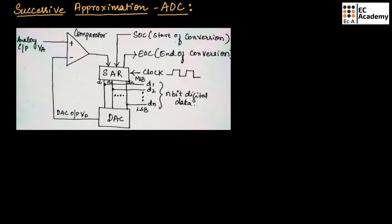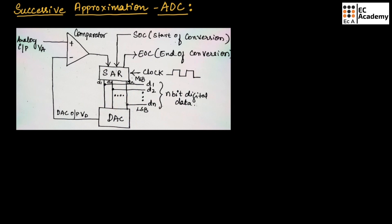The most commonly used analog to digital converter is the successive approximation analog to digital converter. This successive approximation ADC is available in the form of an IC, which is an integrated circuit.